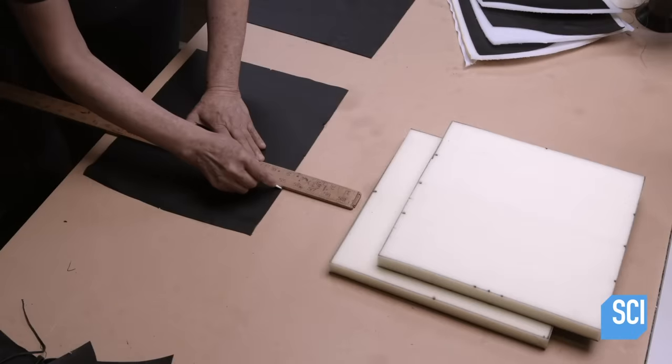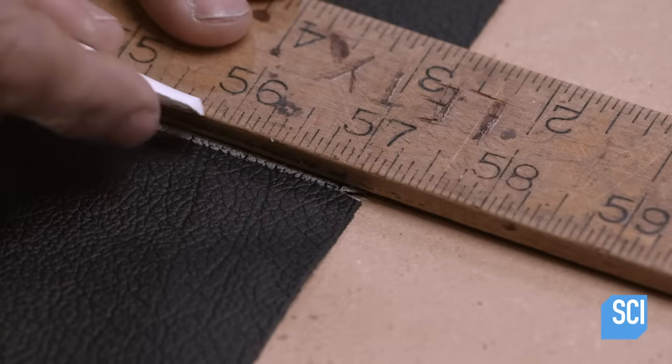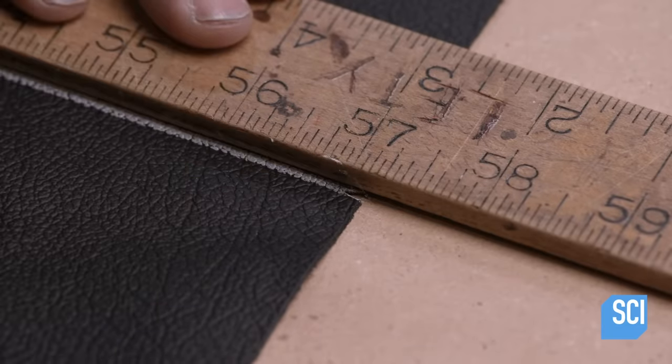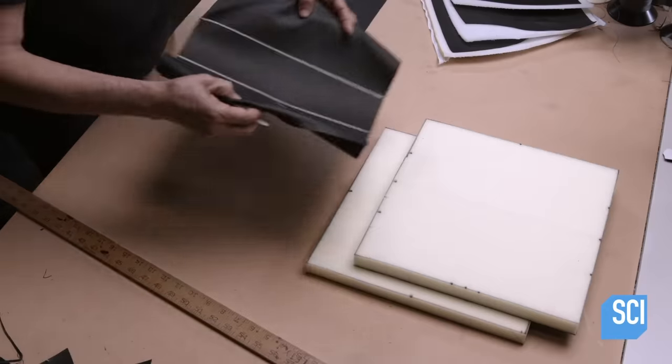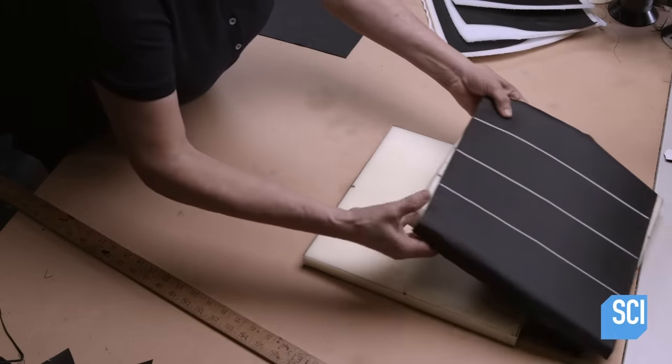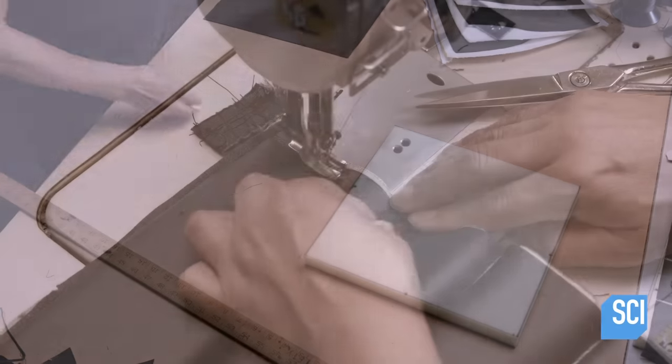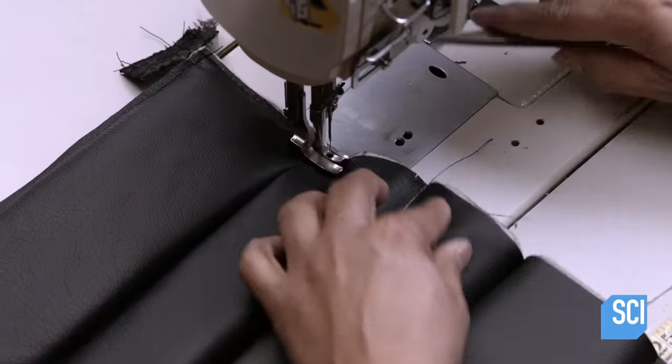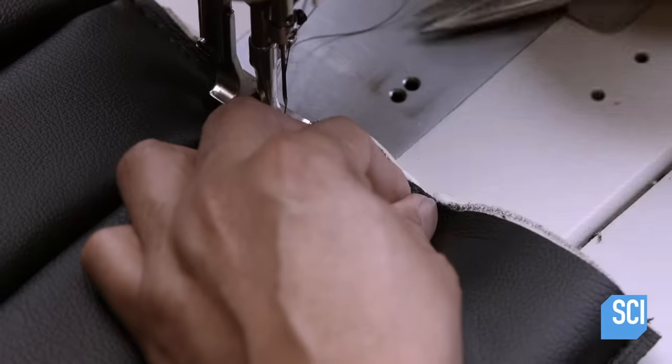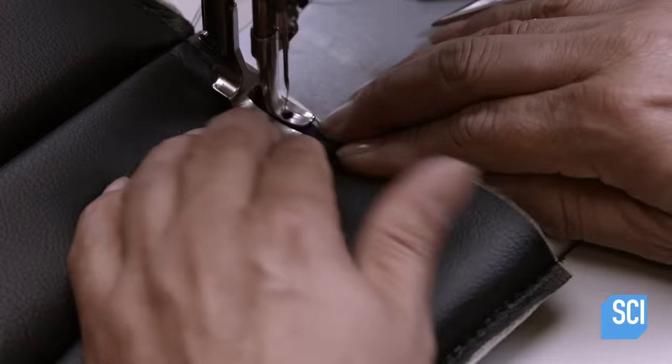Using chalk, he draws lines onto the corresponding leather that match up with the slits in the foam. A worker aligns the chalk lines in the leather with the slits and puckers the leather as he sews the backing to it. This forms a rib pattern in the upper half of the chair upholstery.